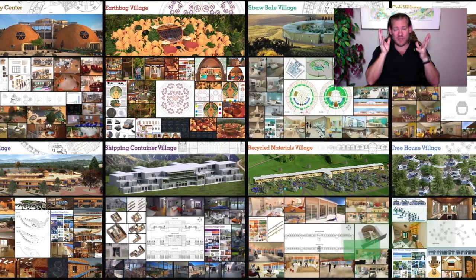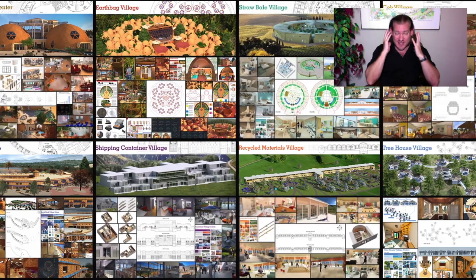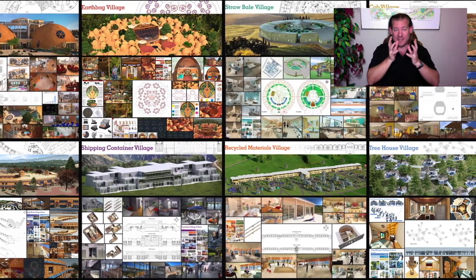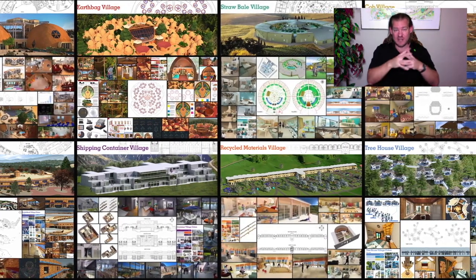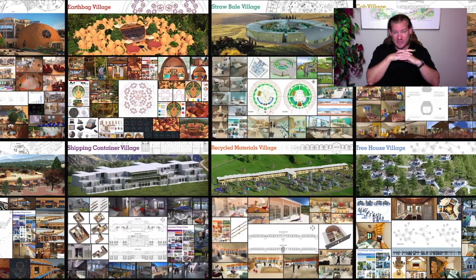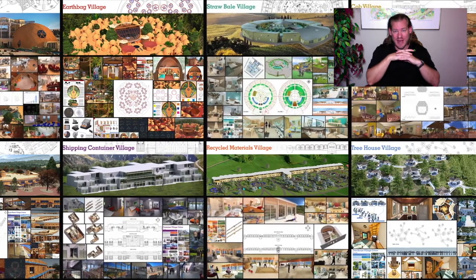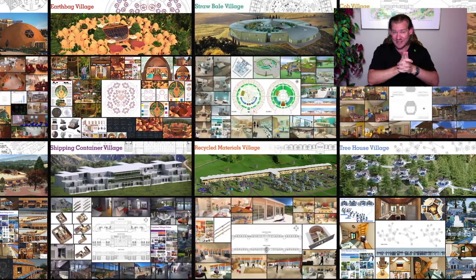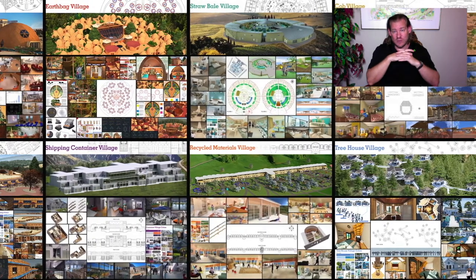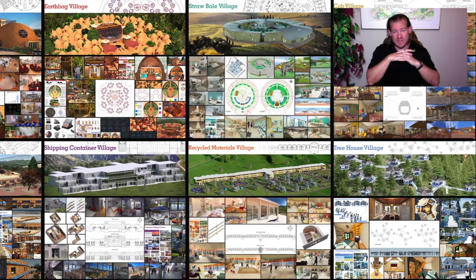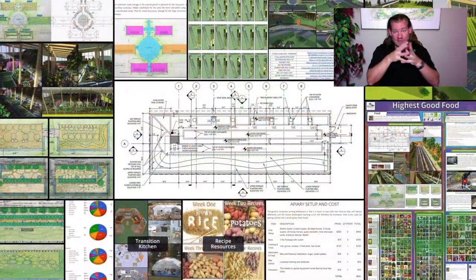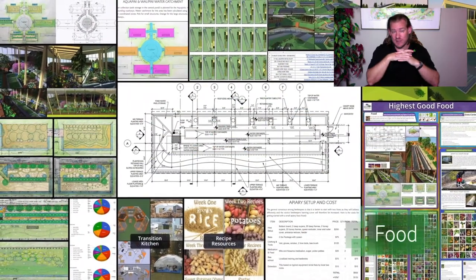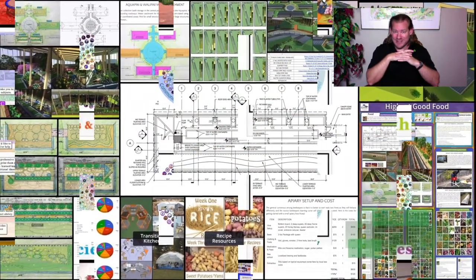One Community is bringing people with the consciousness and the desire for the highest good of all life on this planet to build sustainable and self-replicating teacher demonstration hubs as a pathway to global sustainability and as an example of addressing social inequality with open source sustainability, which is our topic today.